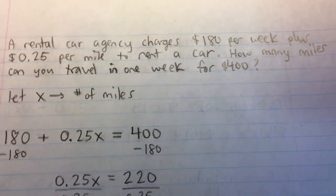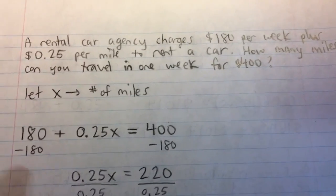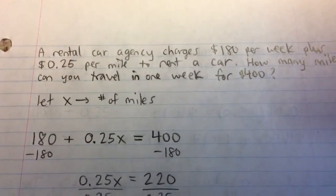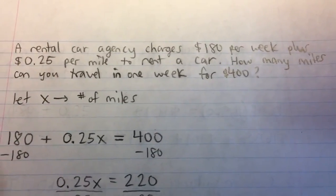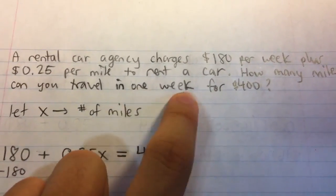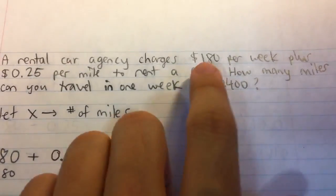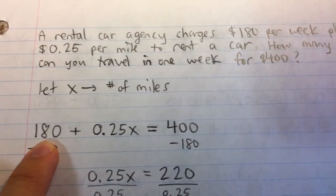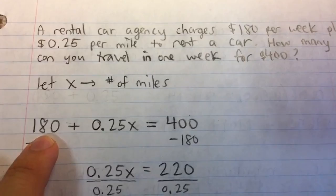And to form an equation that we can solve, we're going to look at what's an expression we can make to model the cost of renting a car for one week, because that's our situation here. So in other words, $180 per week, but it's only for one week, so that's $180 fixed. You can't go higher or lower than that, because it's only one week.